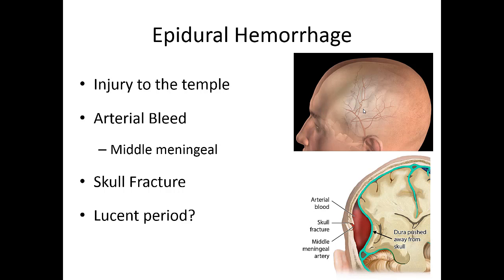Typically these patients will initially lose consciousness from the head blow, then regain consciousness, and shortly after go unresponsive again. That's the textbook presentation, though it doesn't always happen that way. Have a high degree of suspicion for epidural hemorrhage if someone was struck just above the ear on the temporal bone. They frequently have an associated skull fracture. Because it is an arterial bleed, they can herniate very quickly — get them to a hospital quickly so the clot can be removed and the bleeding stopped.